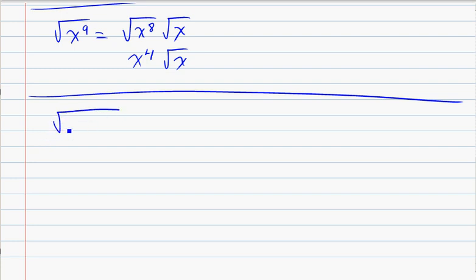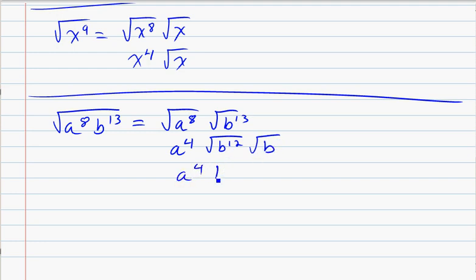If I put two variables into the same radical, say a to the 8th times b to the 13th, I can split that up into two radicals and treat it as two separate problems. The square root of a to the 8th, that's even, so that's a perfect square. That's a to the 4th. b to the 13th, it's odd, so it's not a perfect square, but I'm going to organize it into pairs and non-pairs. b to the 12th is a perfect square. a to the 4th times b to the 6th and you'll have to put the square root of b.